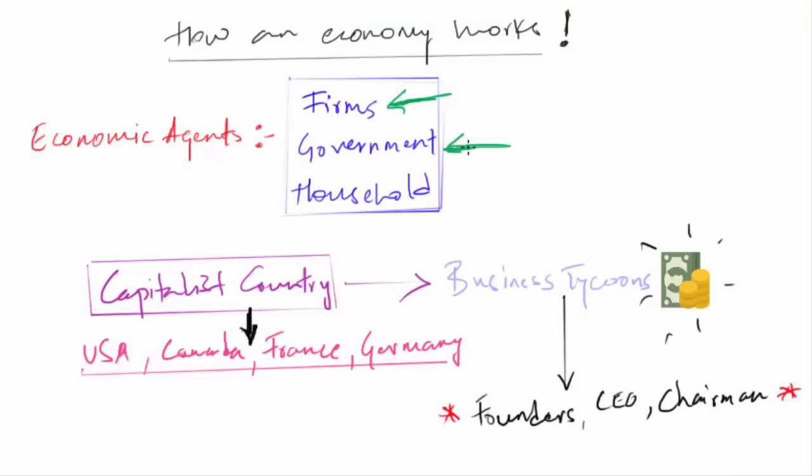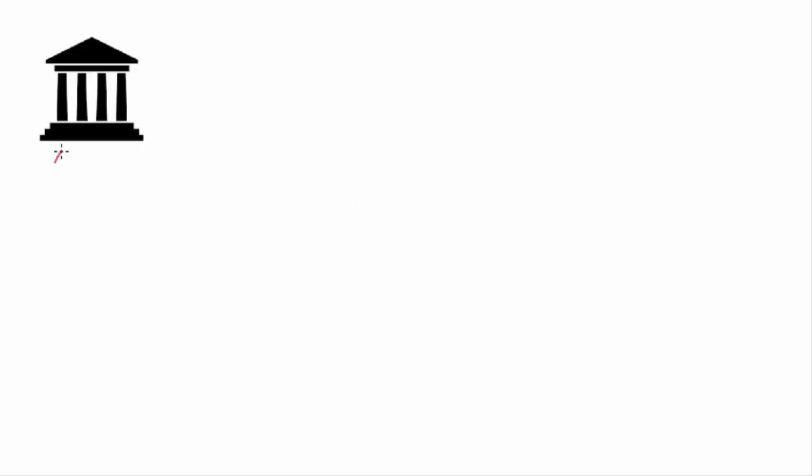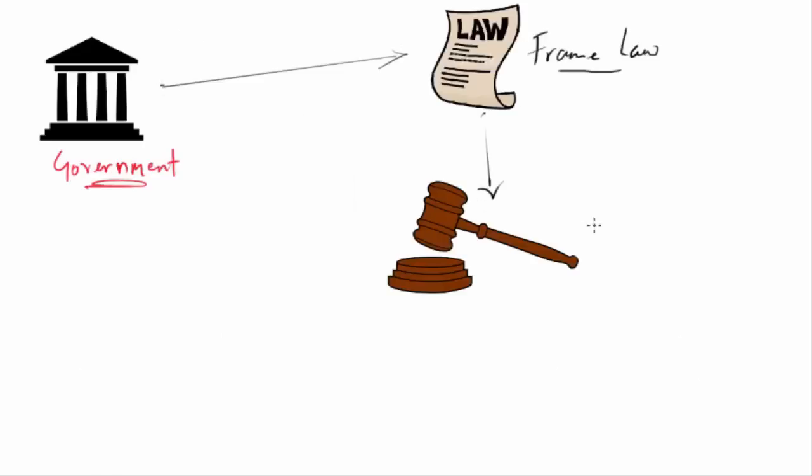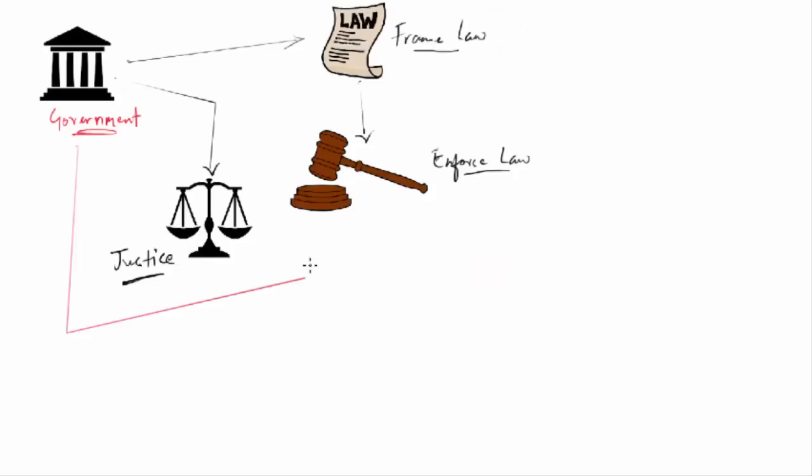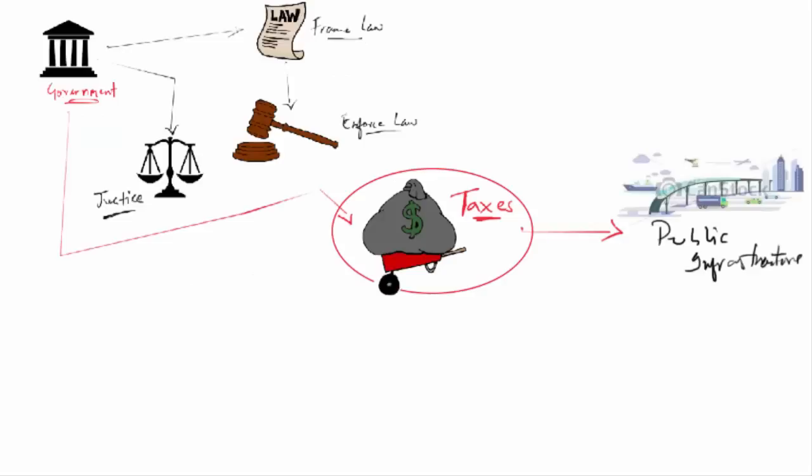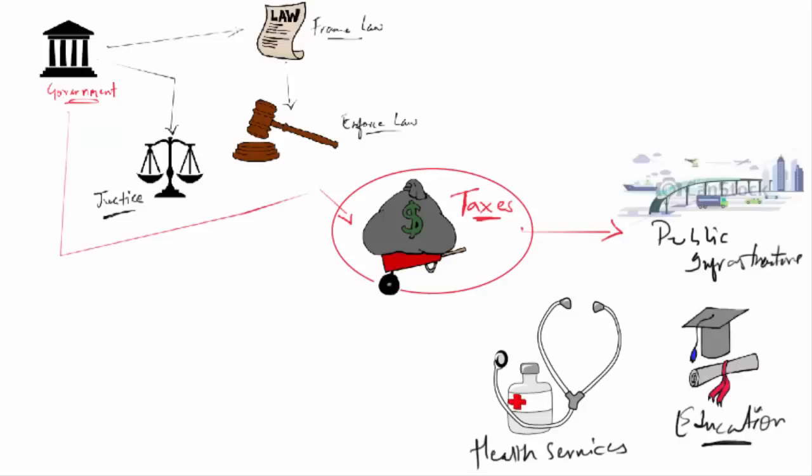Now we will see the role of the government. Apart from the private capitalist sector, there is the institution of state. We refer to this state as government. Now the role of the government includes framing laws, enforcing them, and delivering justice. Apart from this, government also earns revenue by imposing taxes and then it spends the money on building public infrastructure, running schools, colleges, providing health services, and many other social schemes. Therefore, to understand the entire economy, these economic functions of the government must also be considered along with the firms.